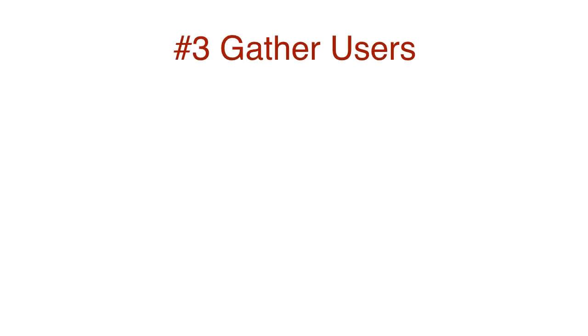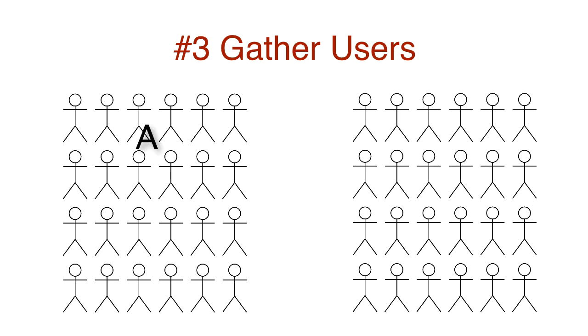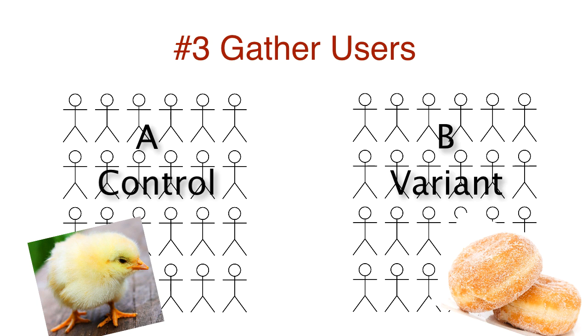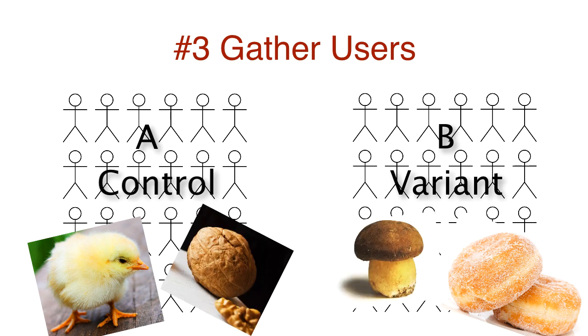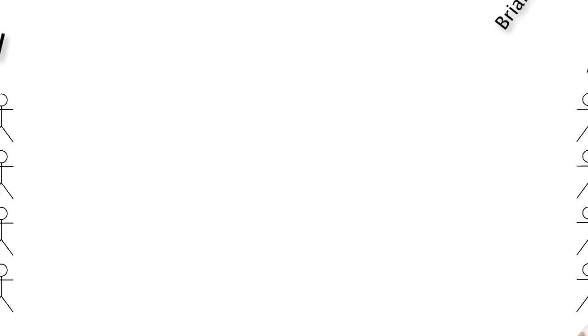Third, gather users. We have a lot of users — let's split them into two groups. Call them group A, group B, control, variant, chickens, donuts, walnuts, mushrooms, whatever. Just give one of them the original product and the other Brian's new feature.